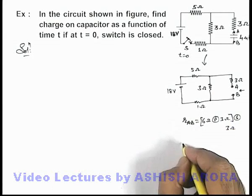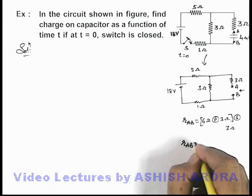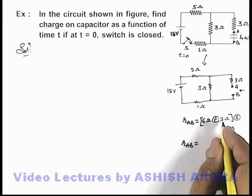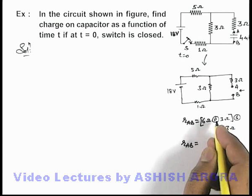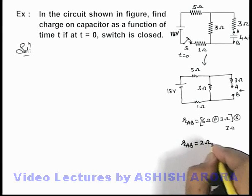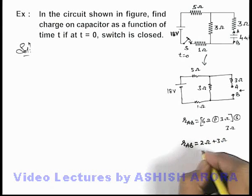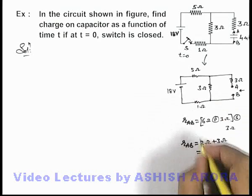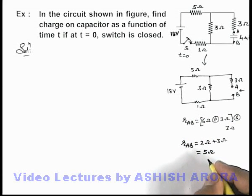So if we analyze, R_AB can be written as 6 into 3 by 6 plus 3, that is 18 by 9 which is 2 ohm resistance plus 3 ohm resistance. So the internal resistance of this circuit can be written as 5 ohm.